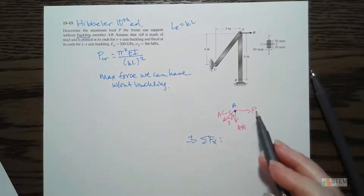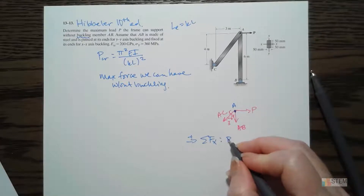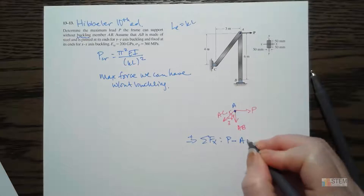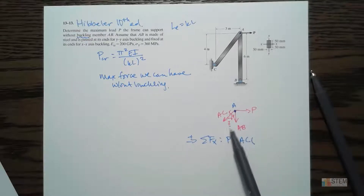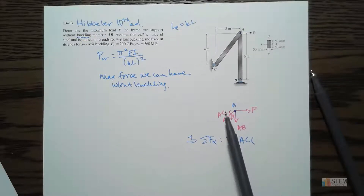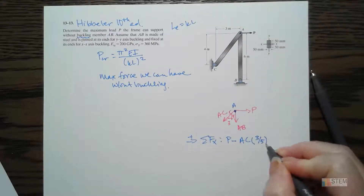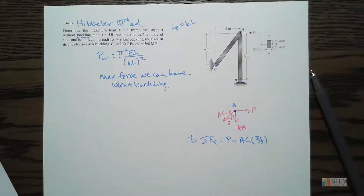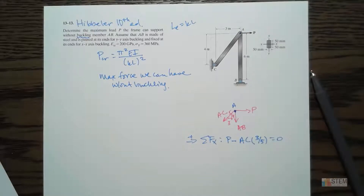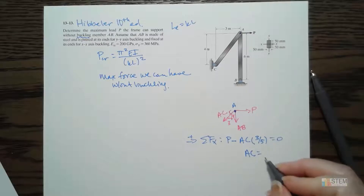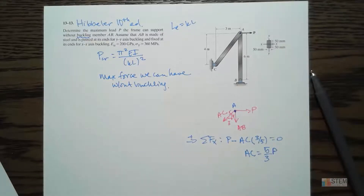For the X equation, I've got P and then AC going to the left. So: plus P minus AC times (3/5) equals zero. The easiest way to figure out the component with these triangles is to pick the side parallel to the axis you're looking for and put it over the hypotenuse. So the X component uses 3 over 5, giving AC = 5/3 times P.